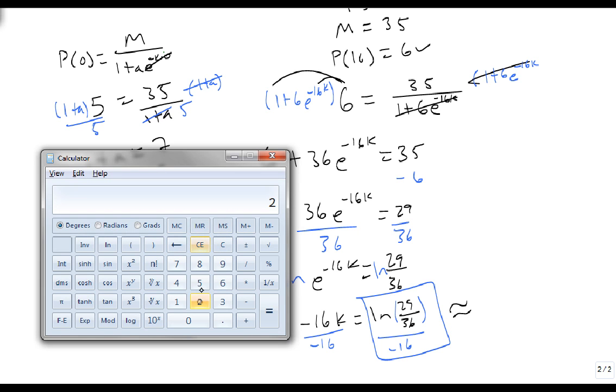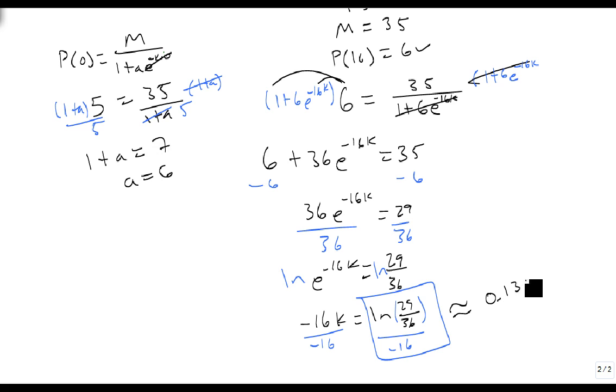we get out our calculator, and we do 29 divided by 36, take the natural log of that, and divide it by a negative 16, and that gives us approximately 0.0135, which is 1.35%. So, it looks like the world is growing at about 1.35% with this logistic model.